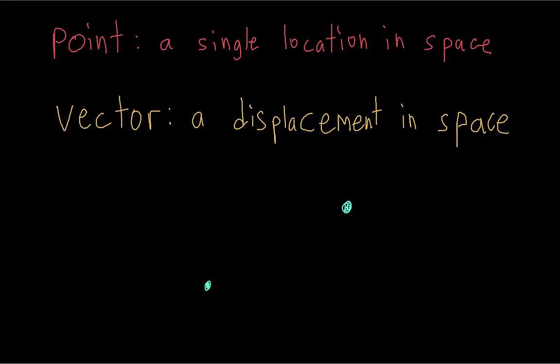These two points here, if we wanted to go from one point to the other, then that would be a vector, because it's a displacement. A vector has a magnitude and direction.